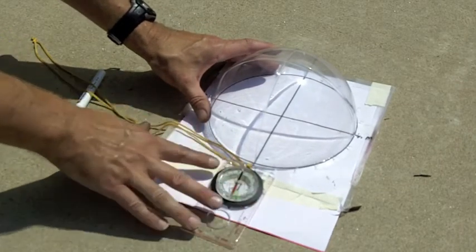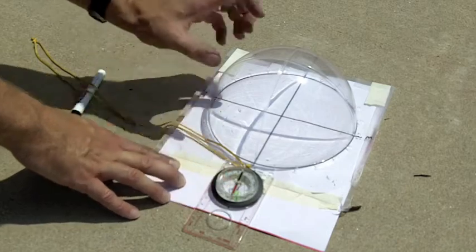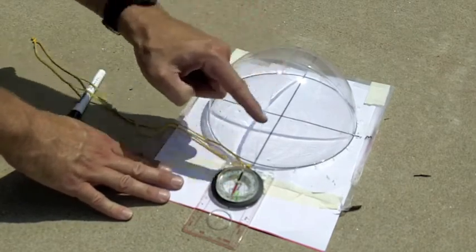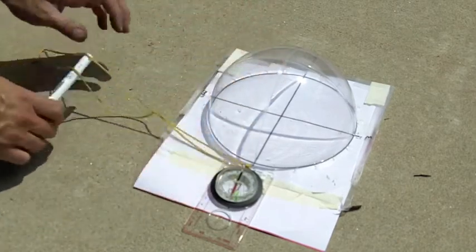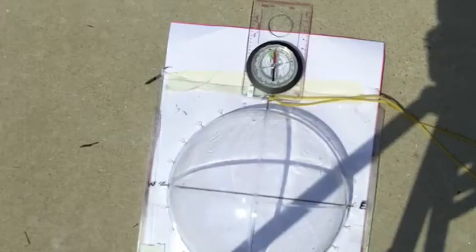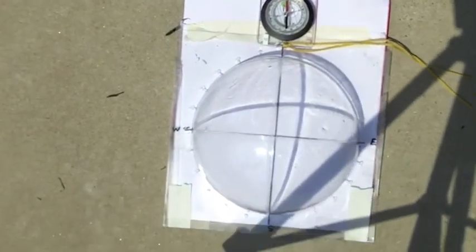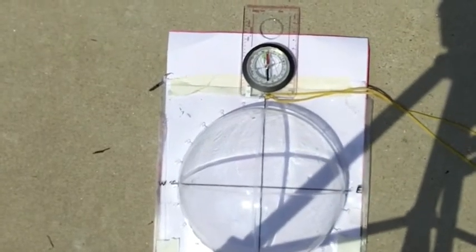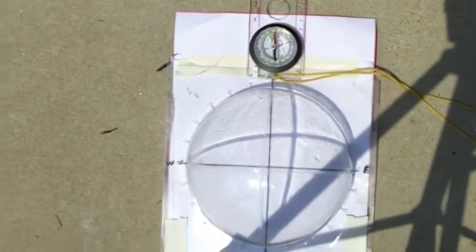until the north-south needle, usually the red needle on the compass, is lined up with the north-south line on your paper. Take a look at that from above. You can see the north-south needle is lined up with the north-south line.